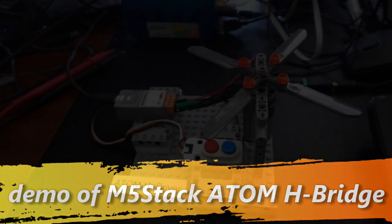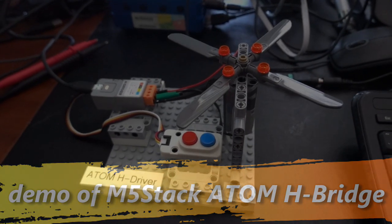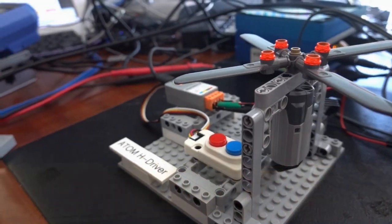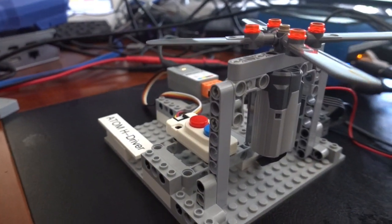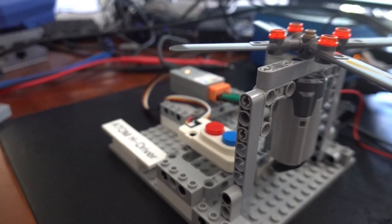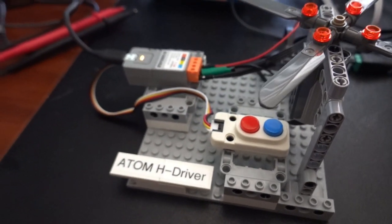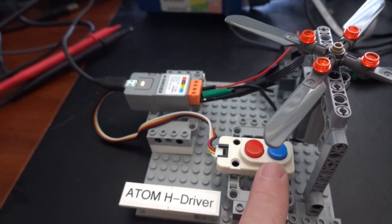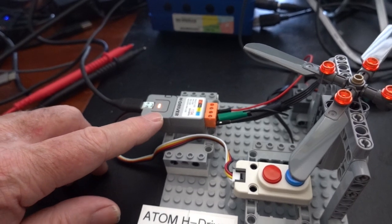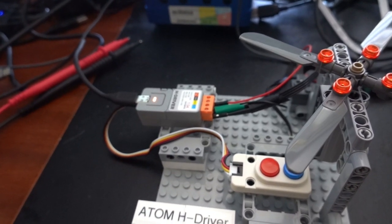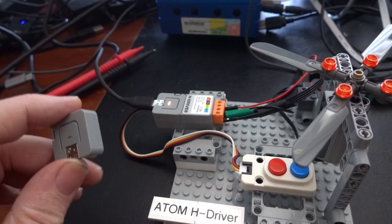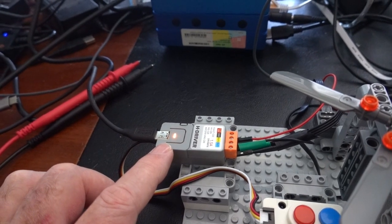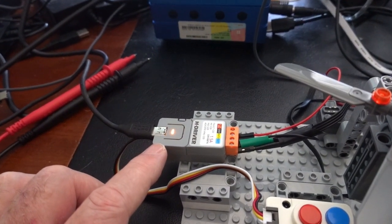This is the Atom H driver, and it's driving a Lego Power Functions motor, which is the M version. You can see the Lego motor here. And the controls, if we want to change direction, we can go forward or reverse. And we're using a small computer from M5 stack called the Atom computer. It's hosting, the Atom computer here is hosting a H drive base.